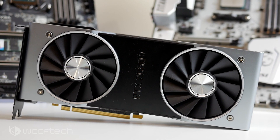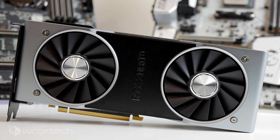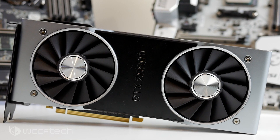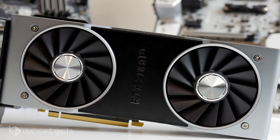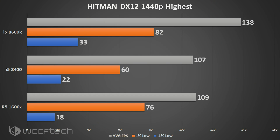Using the latest drivers and latest game builds, starting with Hitman at DX12 1440p, highest settings with SMAA: we're seeing pretty much straight-up domination by the 8600K, thanks to its high clock rates. Even in DX12 it benefits greatly from high frequencies. The 1600X edged out the 8400 on averages but fell slightly behind on the 1% lows, making for an interesting takeaway.